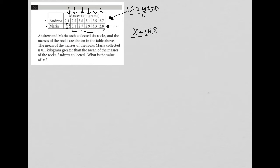She collected six rocks. And that's going to give me some average value, which I will call Y. And the mean of the mass of the rocks Maria collected is 0.1 kilograms greater than the mean of the masses. So I'll call this Y plus 0.1.